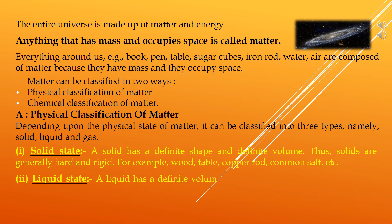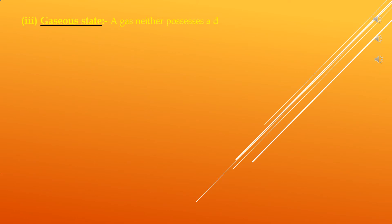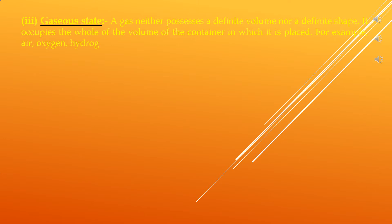Examples of solids include food, table, copper rod, and common salt. Second is the liquid state — a liquid has a definite volume but not a definite shape; a liquid takes the shape of the container in which it is placed. Examples include water, milk, and oil. Third is the gaseous state — a gas neither possesses a definite volume nor a definite shape.